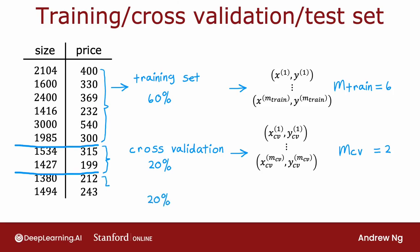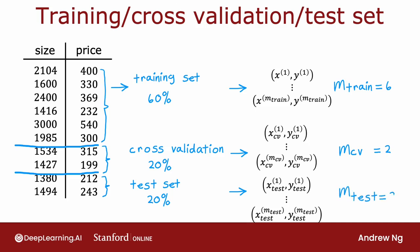Finally, we have the test set, same as before: x(1) through x(mtest) and y(1) through y(mtest), where mtest equals 2. This is the number of test examples. We'll see on the next slide how to use the cross-validation set.